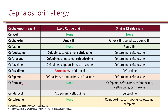Among commonly used cephalosporins: cefazolin has no similar sidechain with other agents. Cephalexin shares sidechains with ampicillin, amoxicillin, and penicillin. Cefoxitin shares with penicillin. Cefpodoxime shares with cefepime and ceftriaxone — so ceftriaxone, cefepime, and cefpodoxime should be avoided together when one causes a severe reaction. Ceftolozane shares a similar sidechain with cefpodoxime, ceftriaxone, cefotaxime, and cefepime as well.